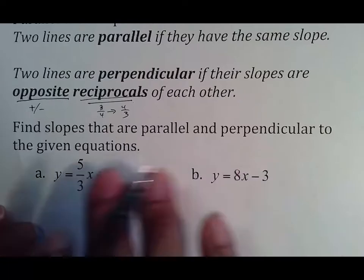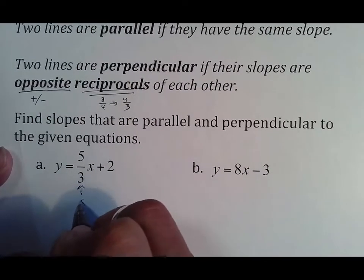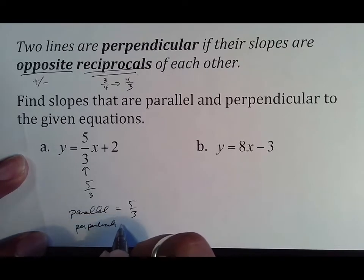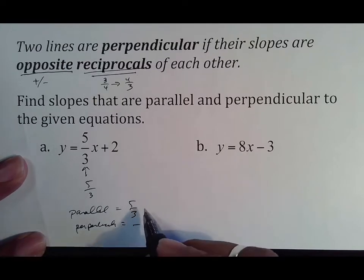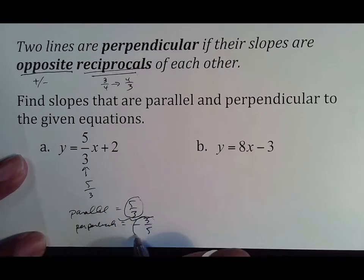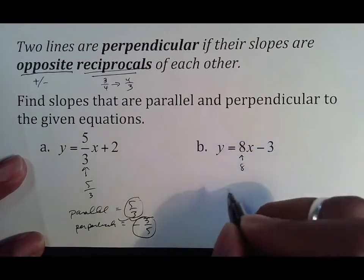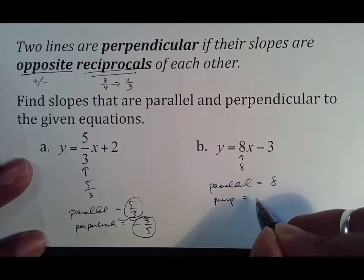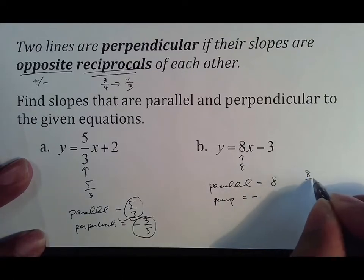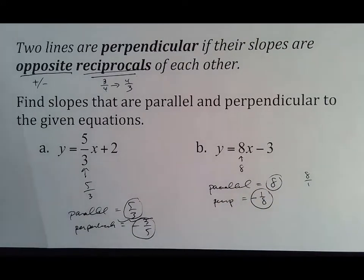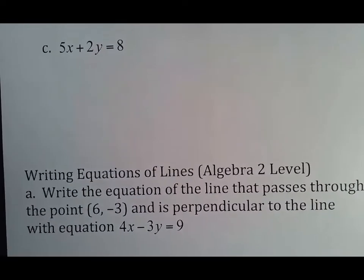Find slopes parallel and perpendicular to a slope of 5/3: the parallel slope is 5/3 (same), and the perpendicular slope is −3/5 (switch the sign, flip the fraction). For a slope of 8: parallel is 8, and perpendicular is −1/8, because 8 is really 8/1, so you flip it to 1/8 and switch the sign. Know this for the test.